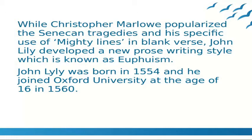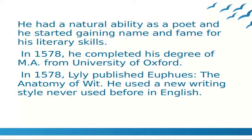John Lilly was born in 1554 and he joined Oxford University at the age of 16 in 1570. He had a natural ability as a poet and he started gaining name and fame for his literary skills. In 1578, he completed his degree of MA from University of Oxford. In 1578, Lilly published Euphues: The Anatomy of Wit.